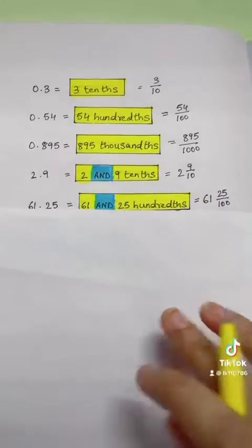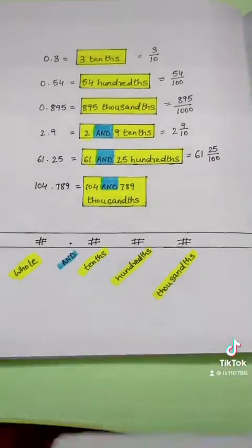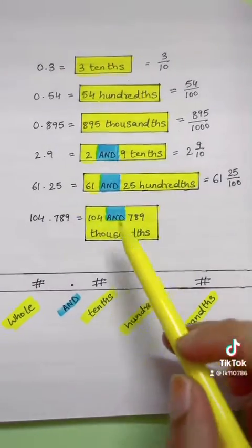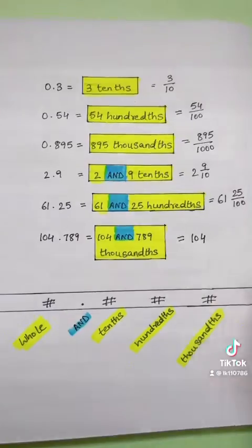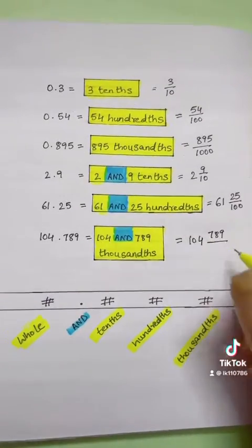Next we have 104.789, which is written as 104 and 789 thousandths and can be rewritten as 104 and 789 thousandths.